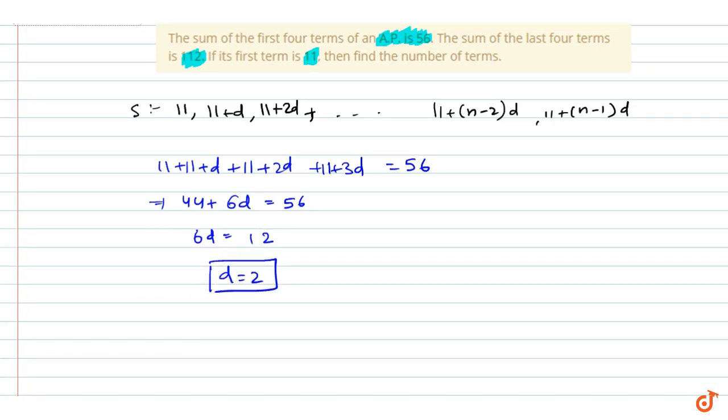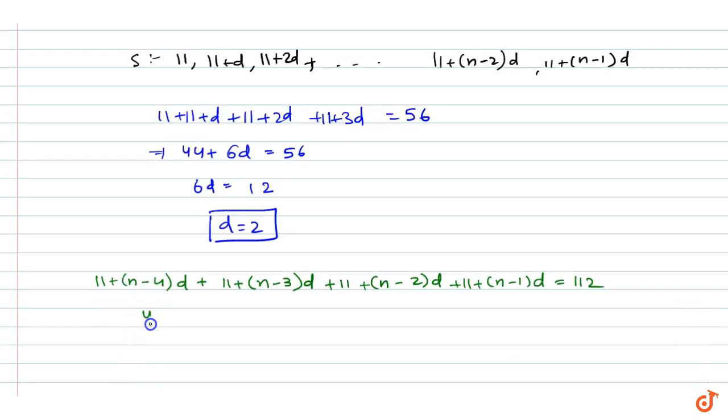Now the second condition given: the last four terms, that is 11+(n-4)d plus 11+(n-3)d plus 11+(n-2)d plus 11+(n-1)d, equals 112.